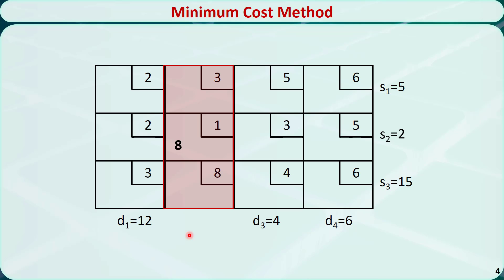Now we need to find the cell with the minimum cost in the remaining tableau. We have a tie — 2 and 2. I randomly selected this cell. The largest amount we can allocate to this cell is 2, because if we allocate more than 2, S2 will be negative. We put 2 here and subtract it from S2 and D1. S2 will be 0 and D1 will be 10. This is the new tableau. We need to cross out the second row and remove S2 because S2 is 0.